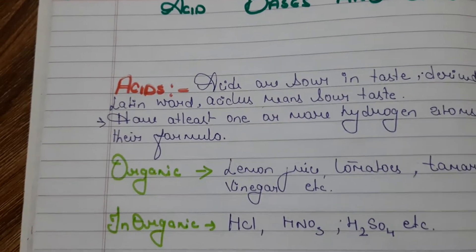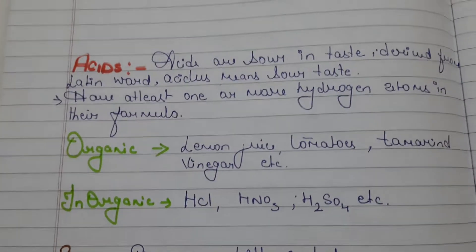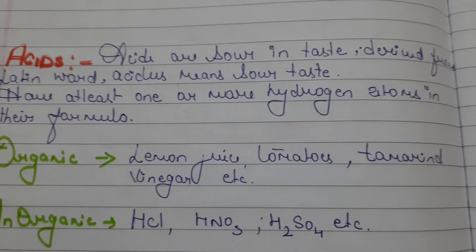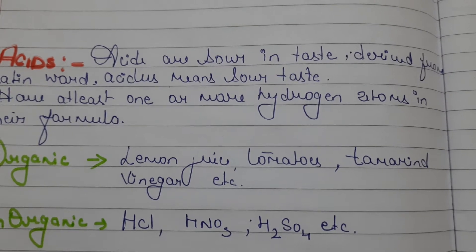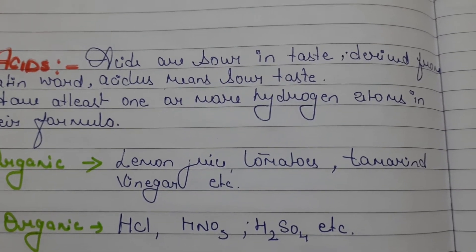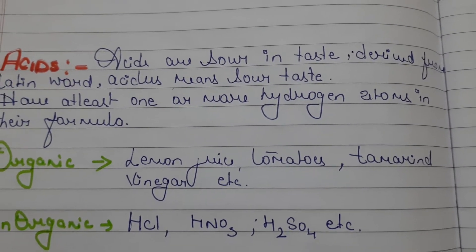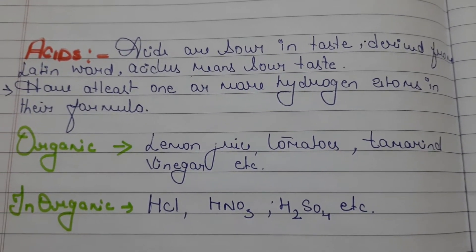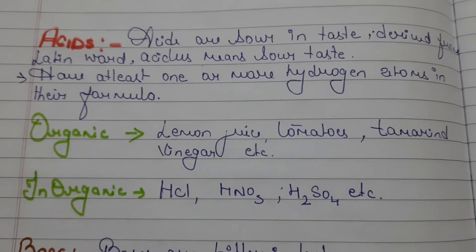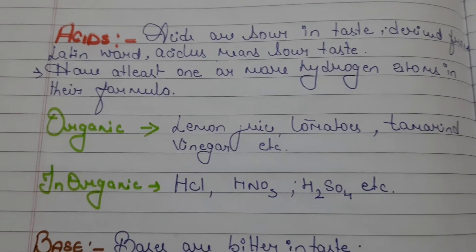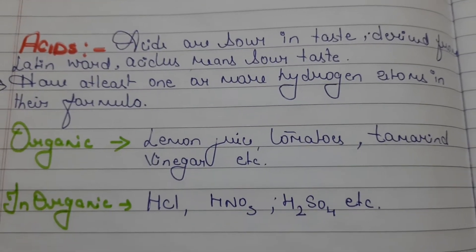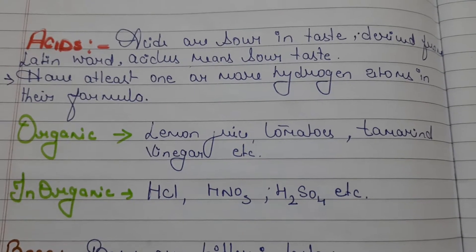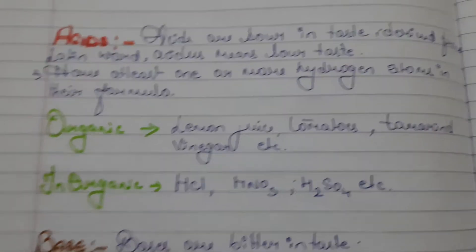Let us look at examples. In our daily life we use many things which are acidic in nature — like lemon juice, orange juice, tomato juice, tamarind juice, and vinegar. Inorganic examples include hydrochloric acid, HNO3, and H2SO4.